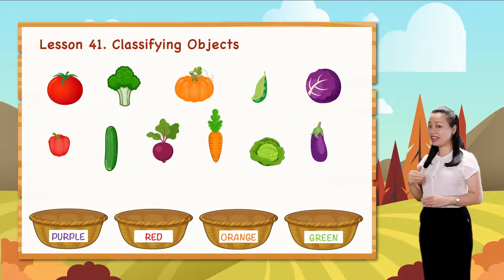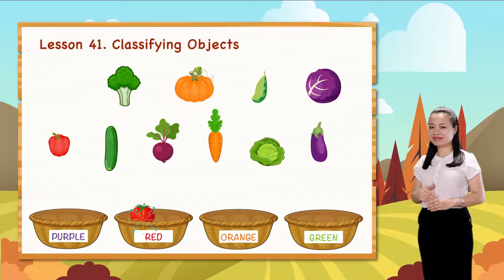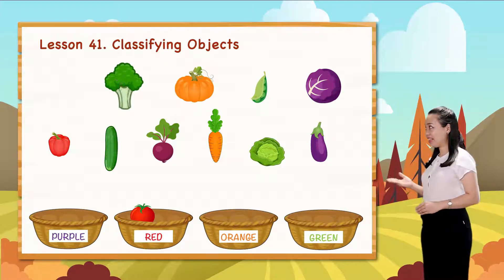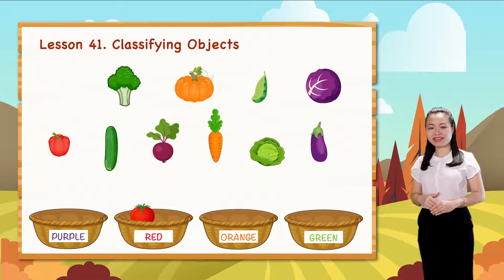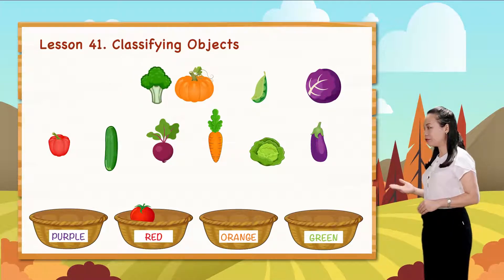This is a tomato. It's red. Let's put it into the red group. This is a broccoli. It's green. Let's put it into the green group.